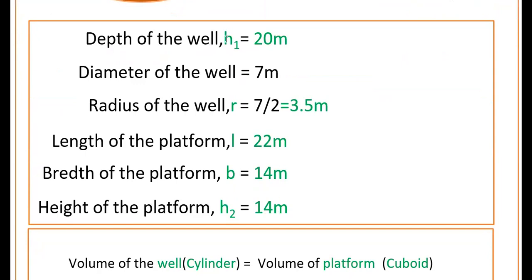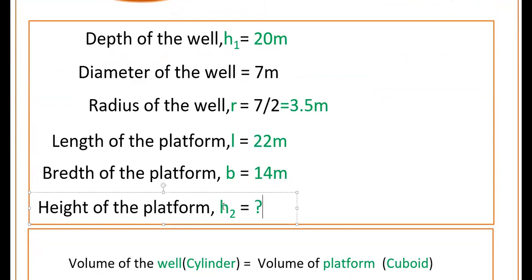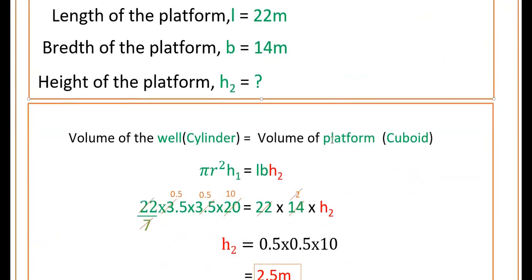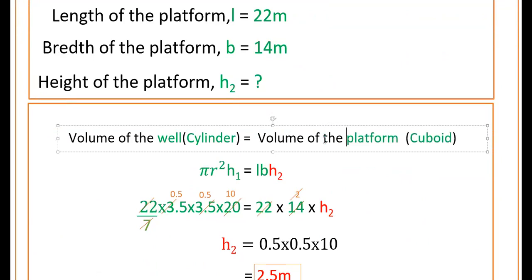The depth or height of the well h1 is 20 meters, and the height of the platform h2 we have to find. Volume of the well is equal to volume of the platform — that is, volume of the cylinder is equal to volume of the cuboid. Volume of the cylinder is π r² h1, and this equals volume of the platform which is l × b × h2.